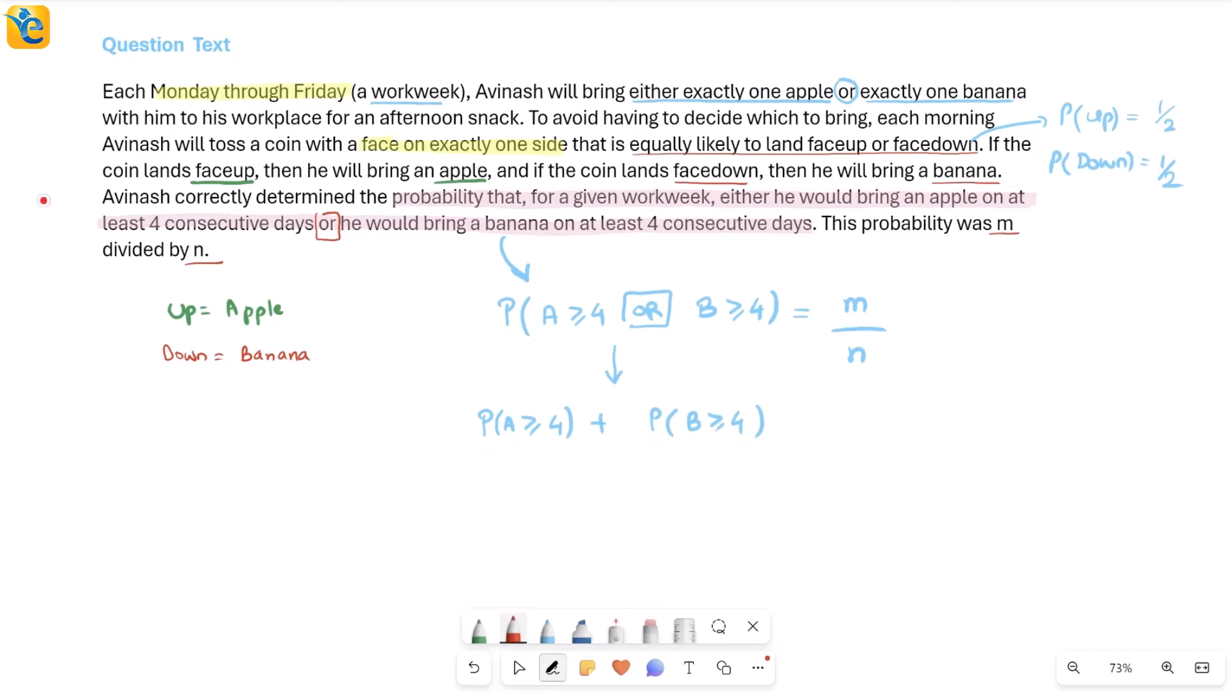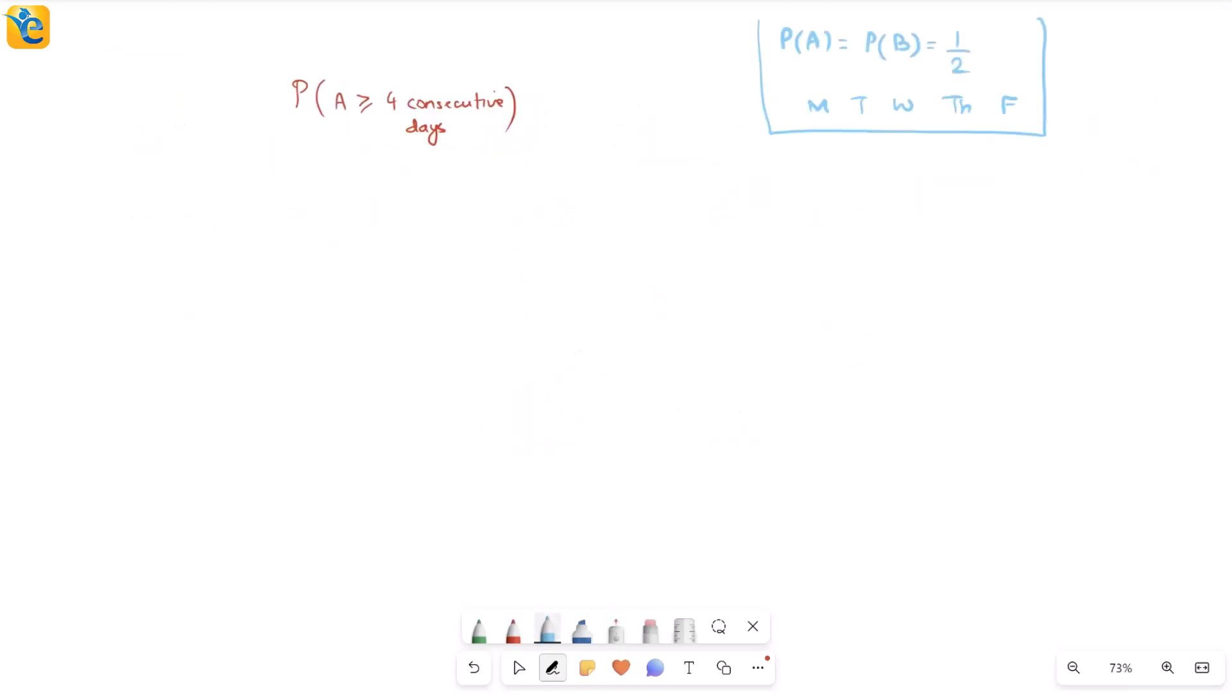Simply this probability that I'm interested in is going to be probability A greater than equal to four plus probability B greater than equal to four. Both of these individual probabilities we'll find and then we will add them. Let me also add the word consecutive because missing that is not a good idea. It's four consecutive days here and four consecutive days here, not any random four days.